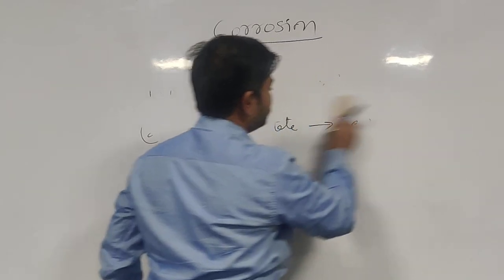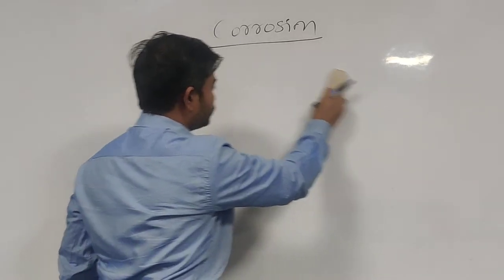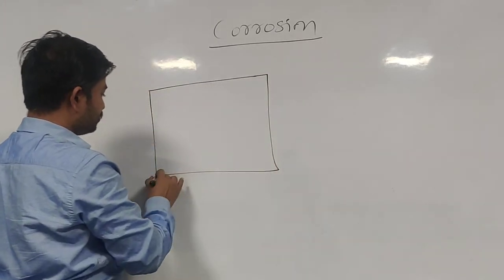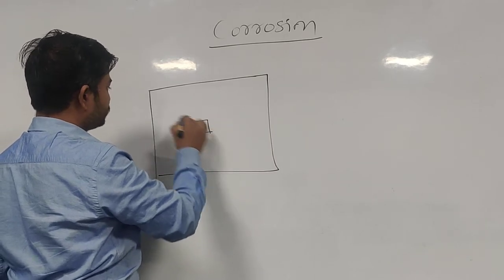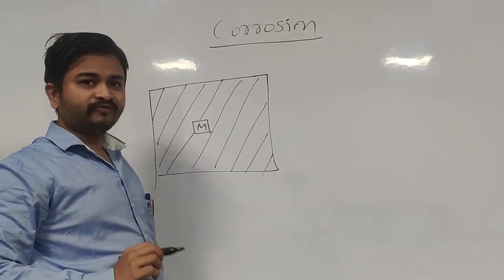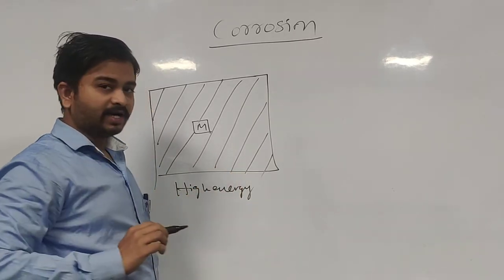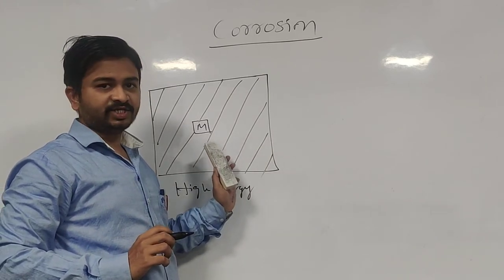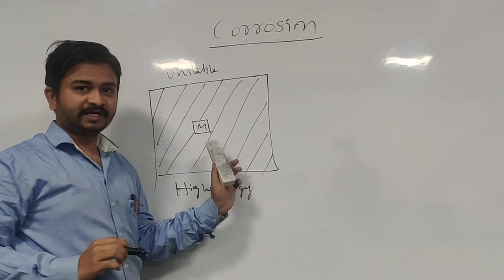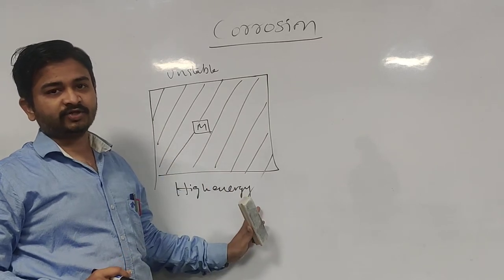These two states are the causes of corrosion. Now let us see the general phenomenon of how corrosion occurs in nature. Corrosion occurs to metals only. A pure form of a metal always has high energy, but it is not very stable — it is unstable. Because of this unstable nature, it gets affected by corrosion.